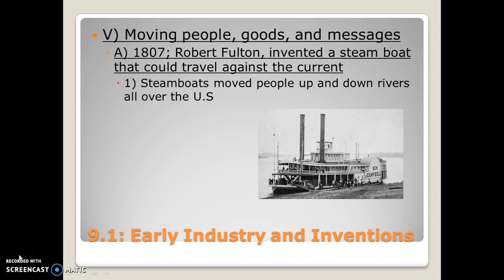In 1807, Robert Fulton invented a steamboat that could travel against river currents. Previously, if you were traveling the Mississippi River, you had to wait for the current to change or take a horse or carriage to go north. The steamboat had enough horsepower to go against the current using paddles on the back of the boat, allowing travel up and down canals and rivers much more quickly and for far less money. This really made the United States begin to feel like it was shrinking.